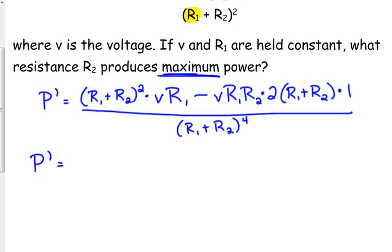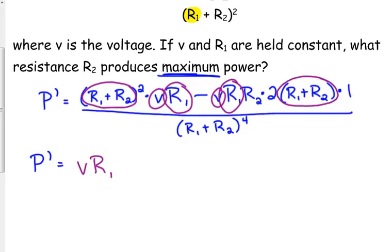Now that top looks really nasty, so let's see if we can kind of clean things up a little bit. What I see is that we've got this R sub 1 plus R sub 2 shows up in both of our terms. What else also shows up in both of our terms? We've got V in both, and we've got R sub 1 in both. So let's factor out that stuff as a GCF.